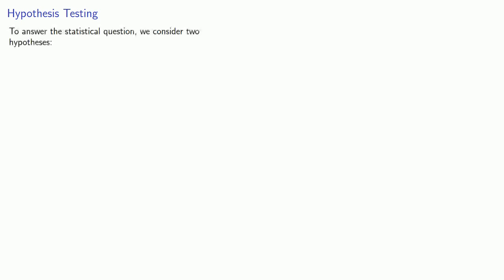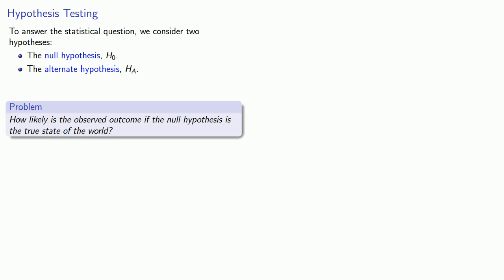Generally speaking, answering a question like 'what is the probability of something' is a little too hard for us to answer. To make it easier to answer these statistical questions, we consider two hypotheses. The first is known as the null hypothesis, sometimes indicated H0, and the other is called the alternate hypothesis, indicated H-A. The ultimate goal of statistics is the question: which of these two hypotheses do I choose to believe? More formally, we can state the problem this way: how likely is the observed outcome if the null hypothesis is the true state of the world?